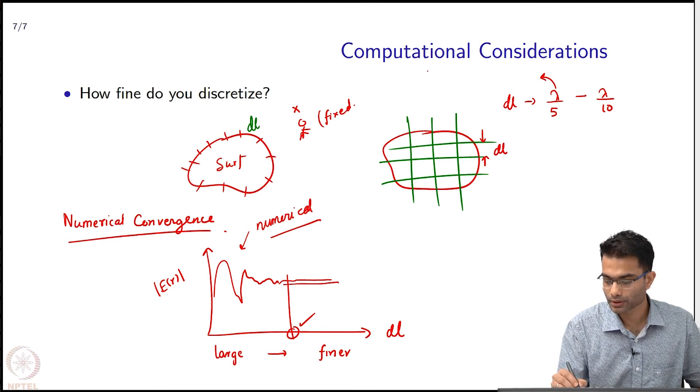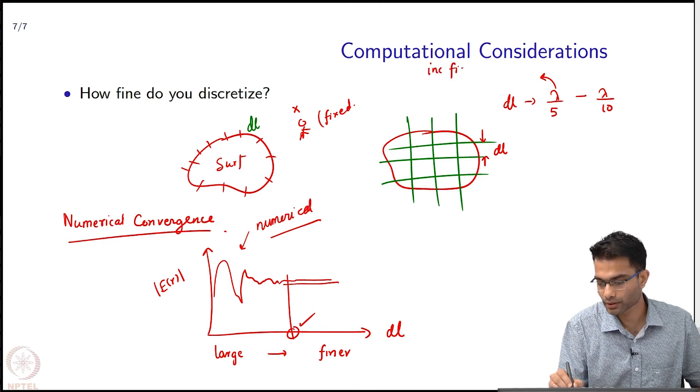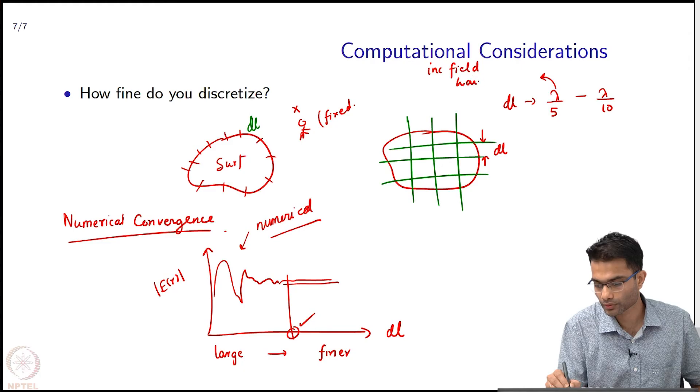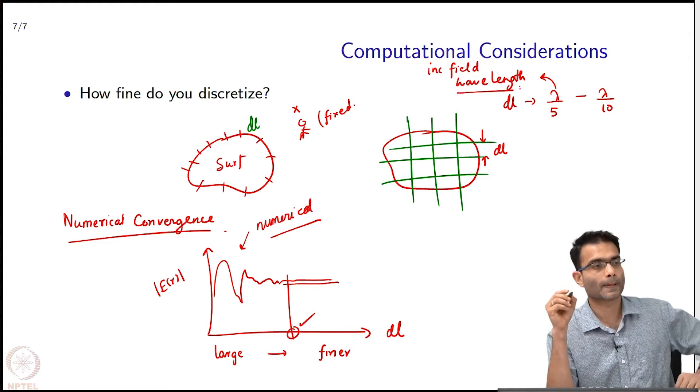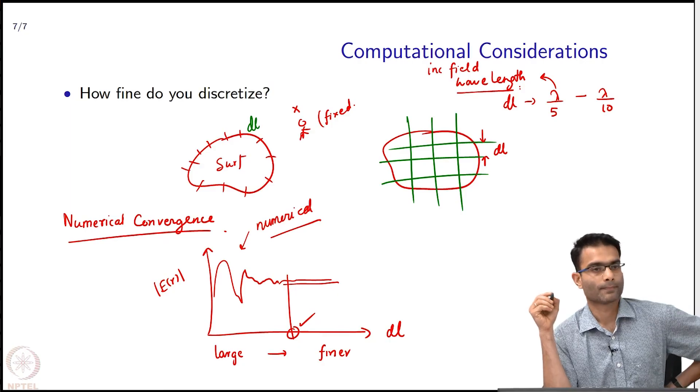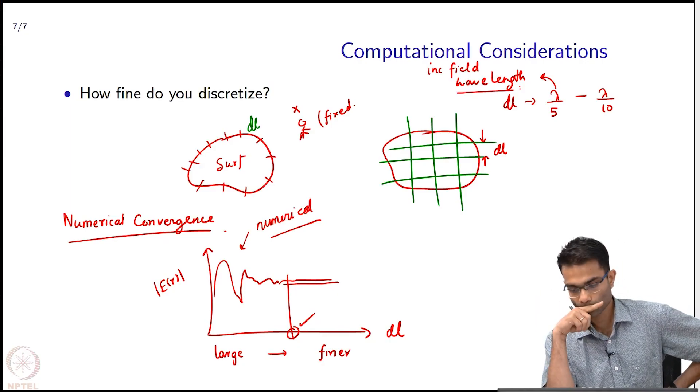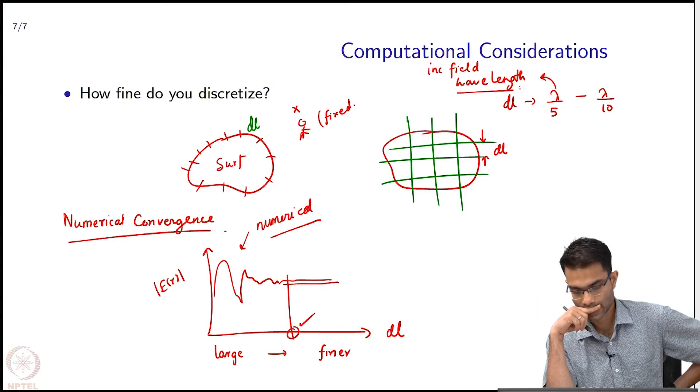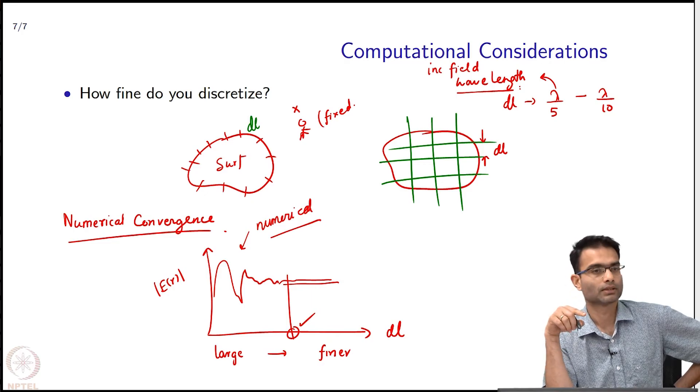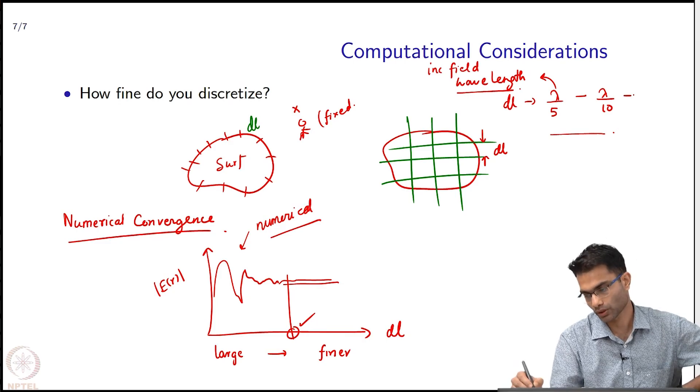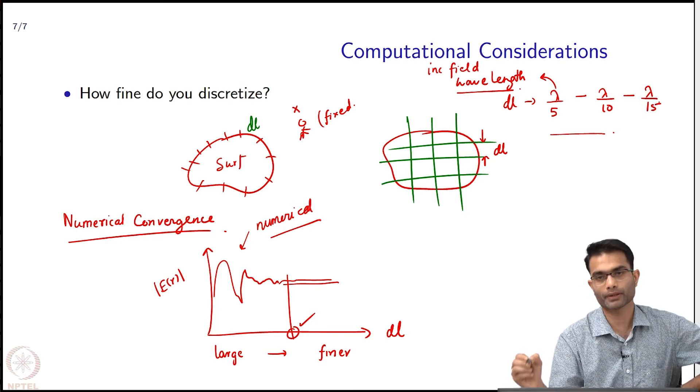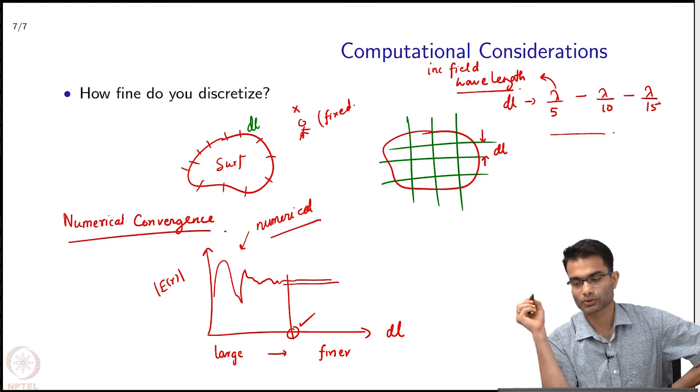So, lambda is incident field wavelength. This is sufficient to give you a reasonable answer. You can even go all the way to lambda by 15 depending on the problem.